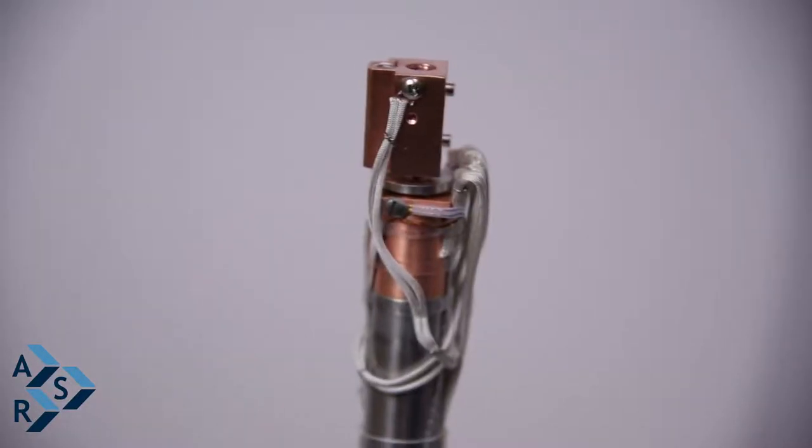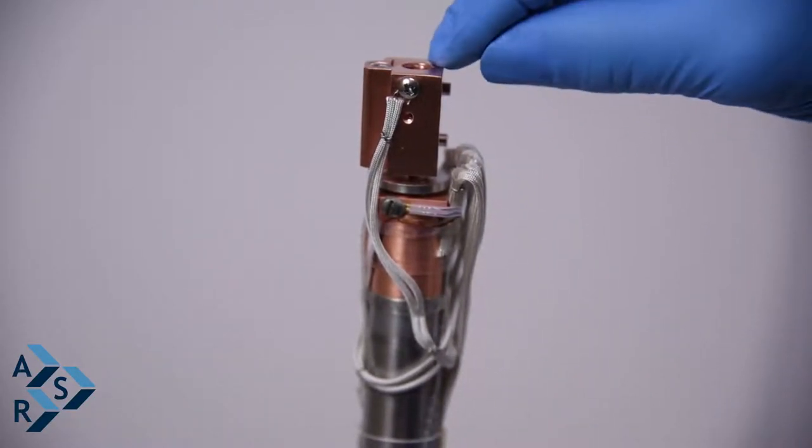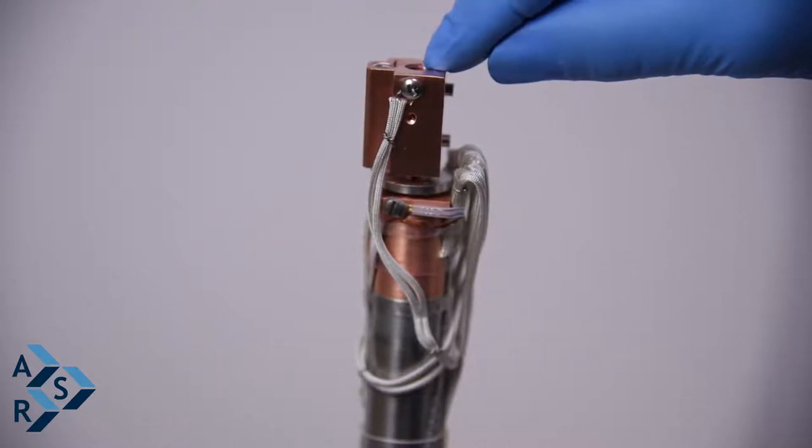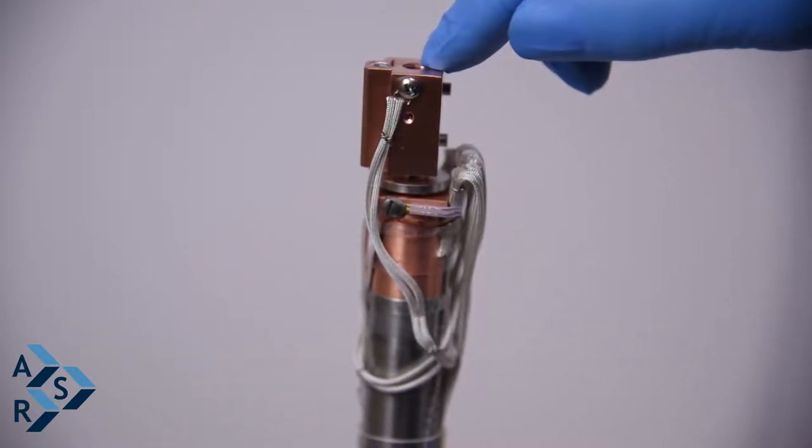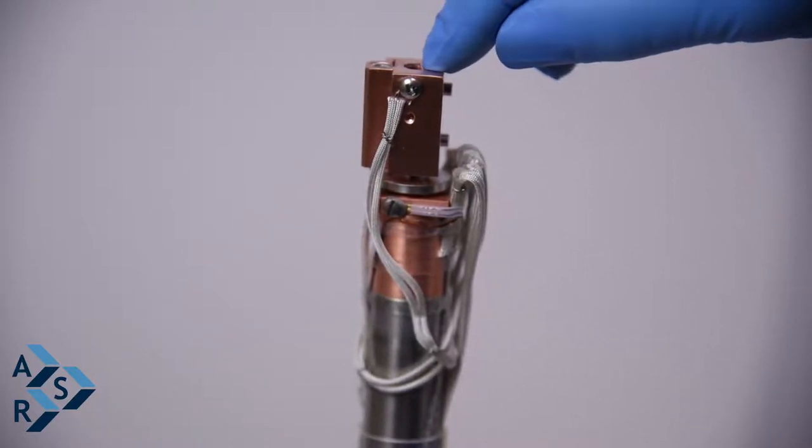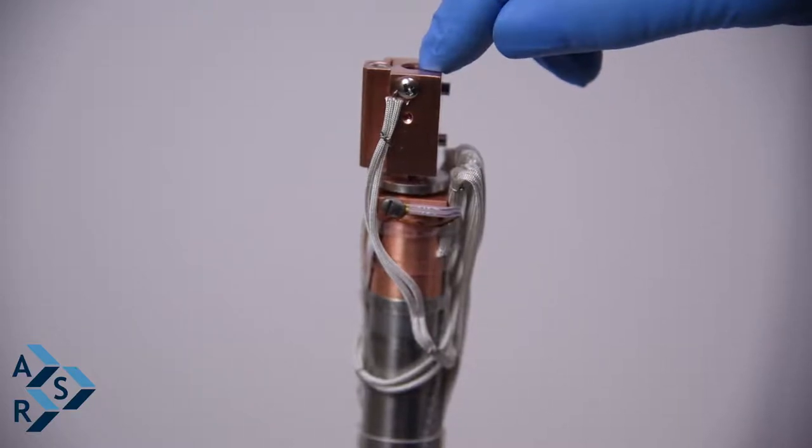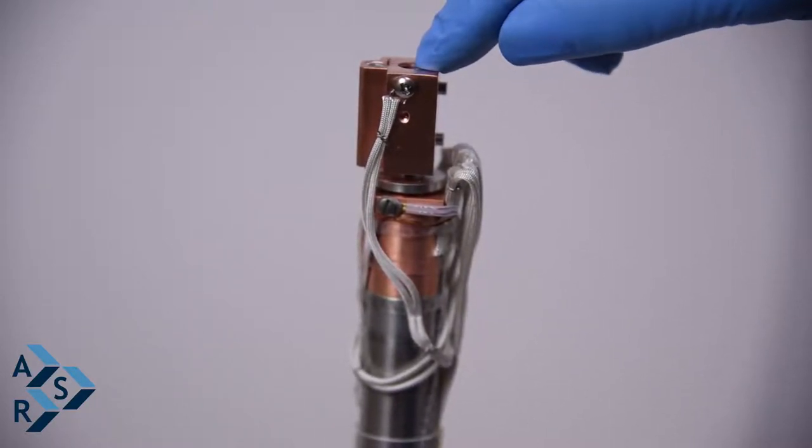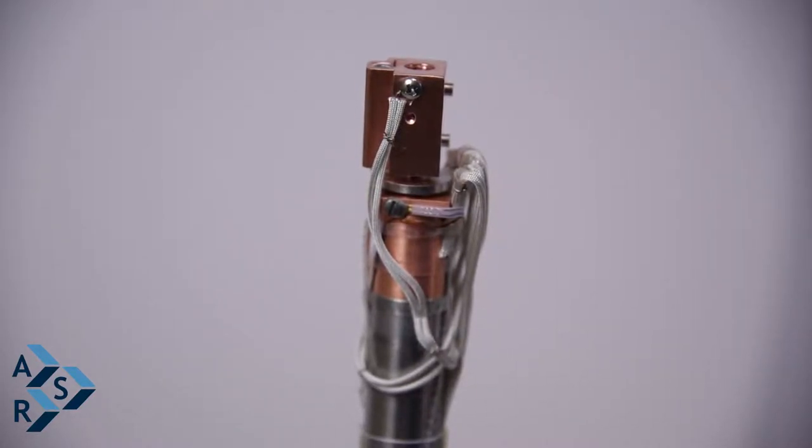The first thing you want to do is inspect your interface. There is a helicoil installed in the tip of the interface to prevent copper to copper contact with the threads, so you don't end up at high temperatures seizing the sample holder into your interface and you can have more cycle time.